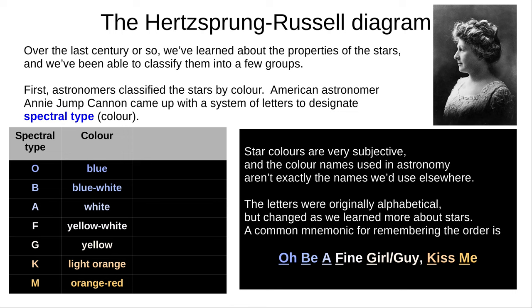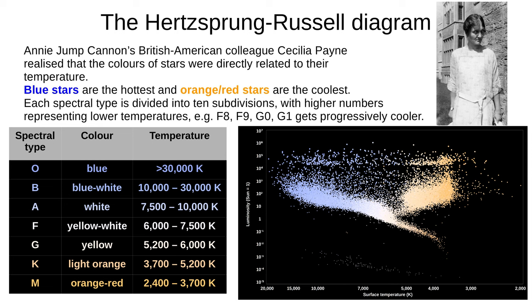Astronomers like to remember the current order using the mnemonic: O, B, A, Fine, Girl or Guy, Kiss Me. Cecilia Payne, Annie Jump Cannon's British-American colleague, was the first to realise that the colours of stars are directly related to their temperature, resulting in a partial reordering of the letters. Blue stars are the hottest and orange-red stars are the coolest. Within each spectral type we now have 10 subdivisions, where higher numbers represent lower temperatures. So for example, the sequence F8, F9, G0, G1 represents progressively cooler stars.